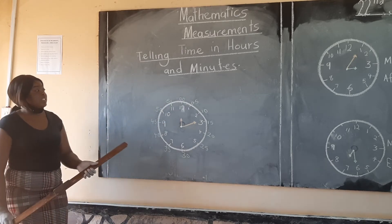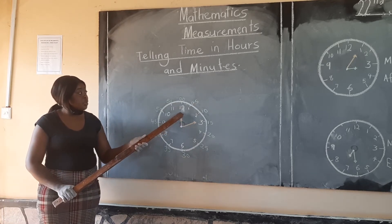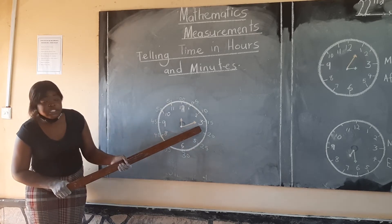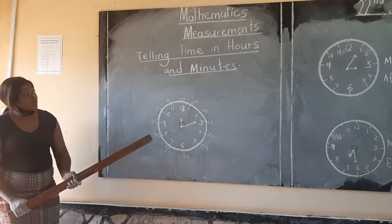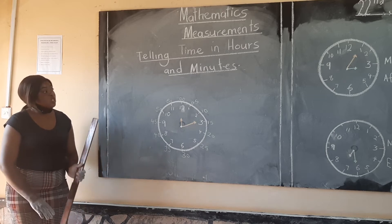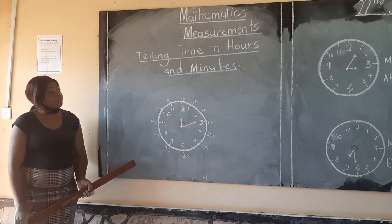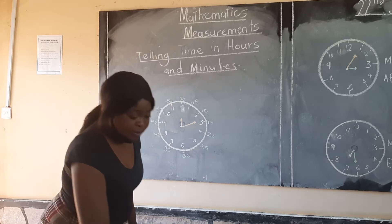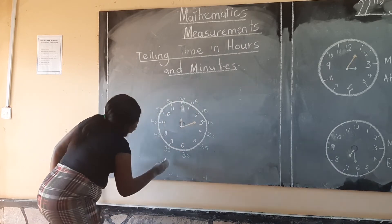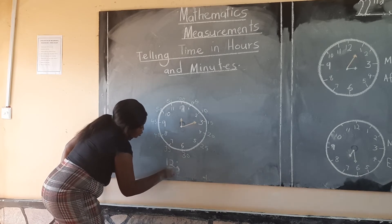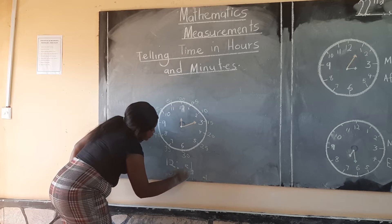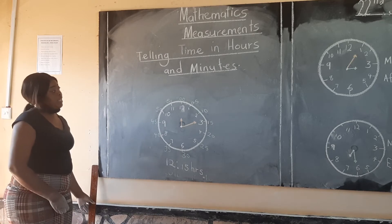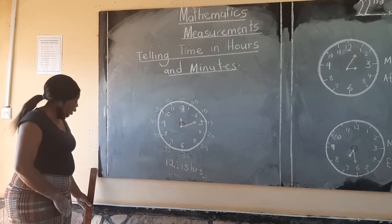So here the short hand is pointing at 12, showing the hour is 12. And the long hand is pointing at 3, showing 15 minutes. So our clock is showing 12:15. The time on the clock is 12:15 hours.